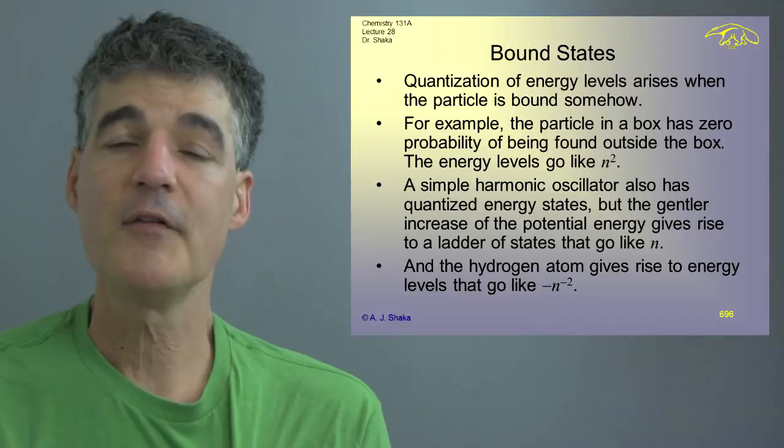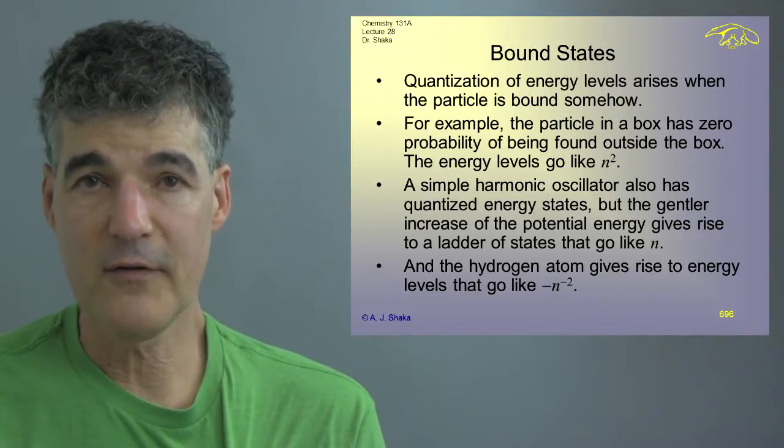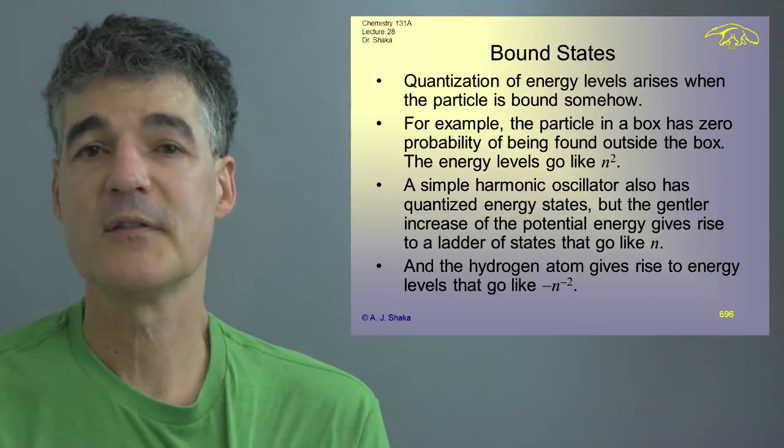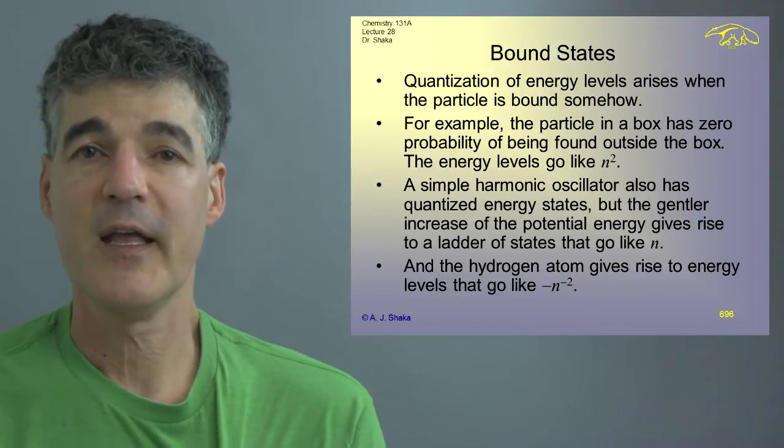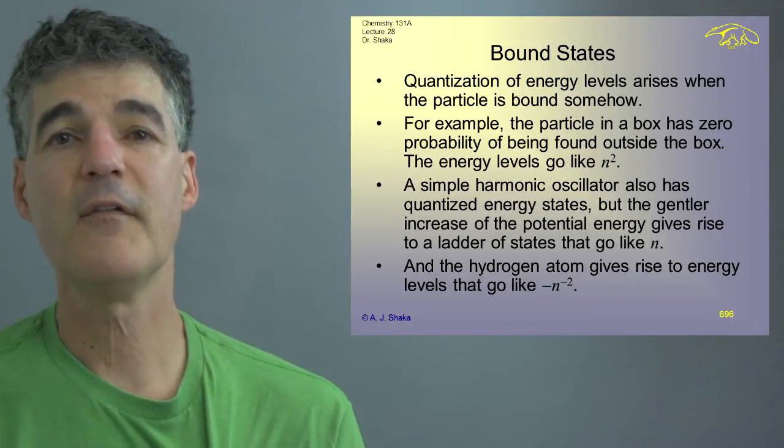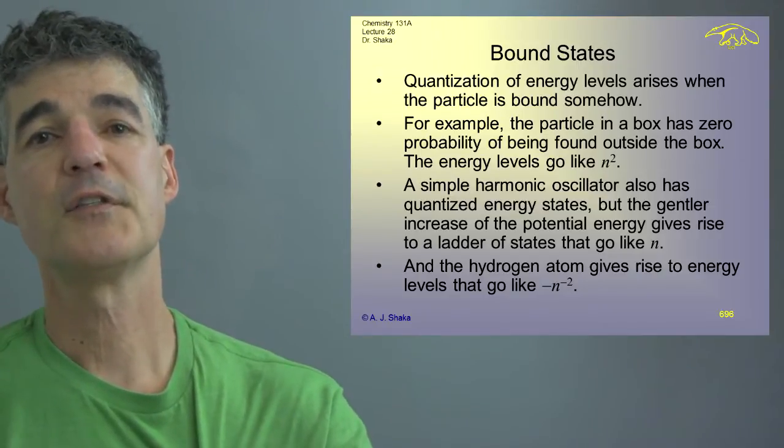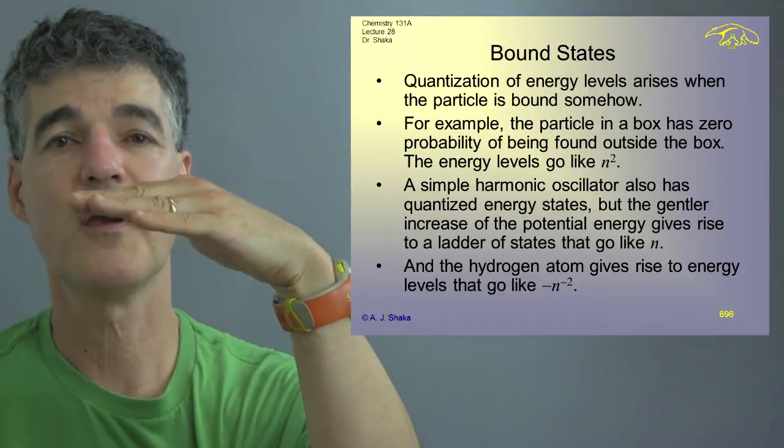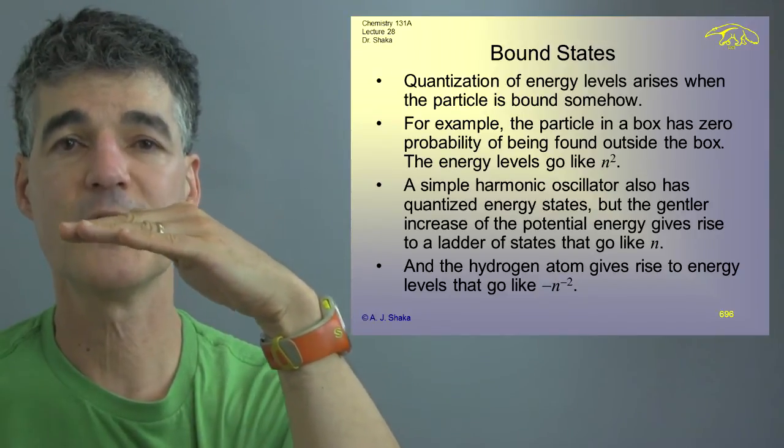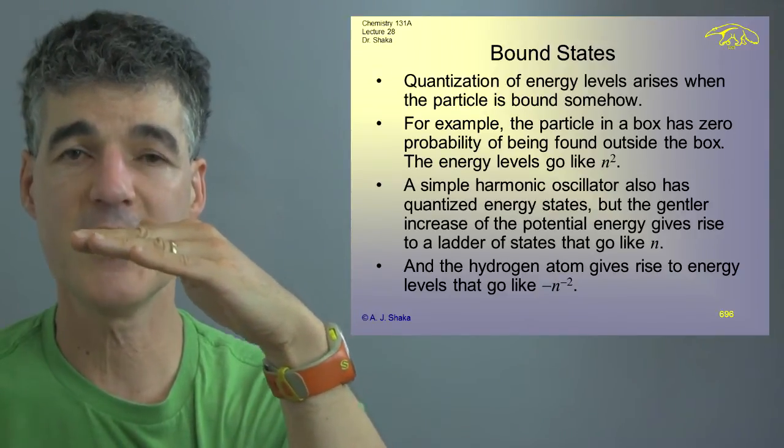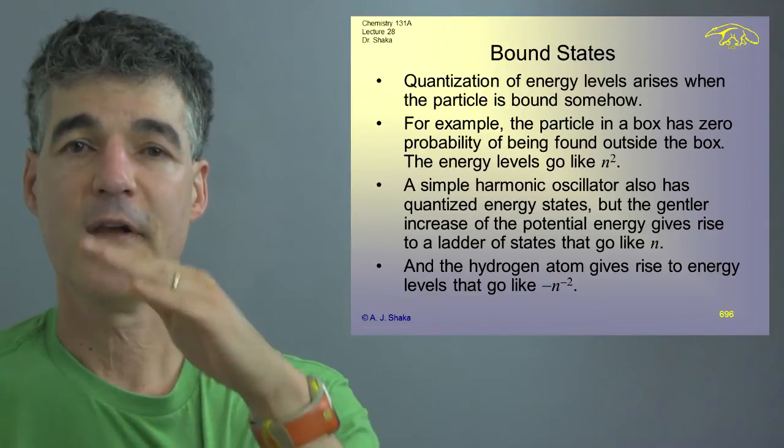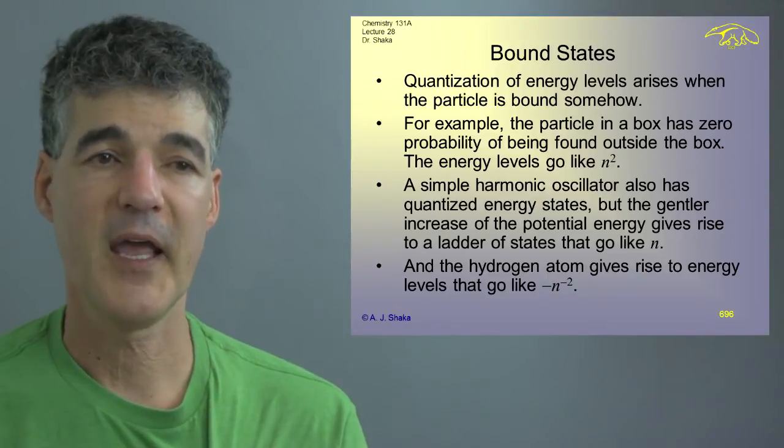And then the hydrogen atom is another one we can solve. And here the levels go like minus e over n squared. And again, we have an infinite number of levels, but there's a lowest one. And as they come up to some level that we call zero there, which is an isolated proton and an electron at infinity, we have an infinite number of levels in there, but they're within a finite band.